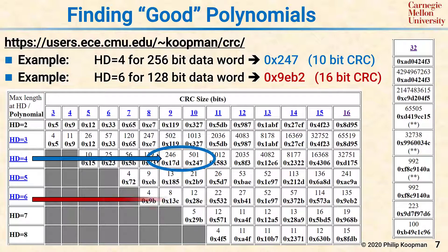As another example, if you want Hamming distance 6 for a 128-bit data word, you look at the HD6 row and find that 114 bits at 15 bits isn't quite enough, but a 16-bit CRC will give you Hamming distance 6 up to 135 bits. You only need 128, so that's the one you want, and the polynomial is 9EB2.